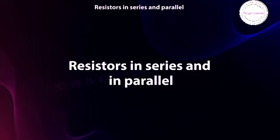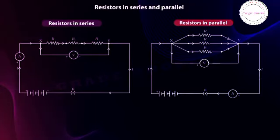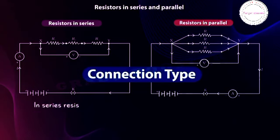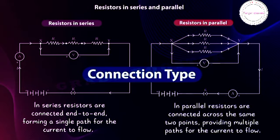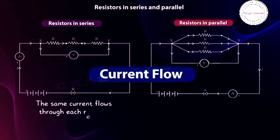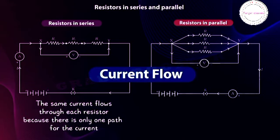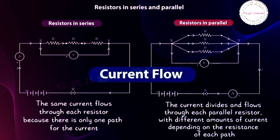Resistors in series and in parallel: in complex circuits, more than one resistor may be used, arranged in series or in parallel. In series, resistors are connected end to end, forming a single path for the current to flow; in parallel, resistors are connected across the same two points, providing multiple paths. In series, the same current flows through each resistor; in parallel, the current divides among the resistors, with different amounts flowing depending on the resistance of each path.